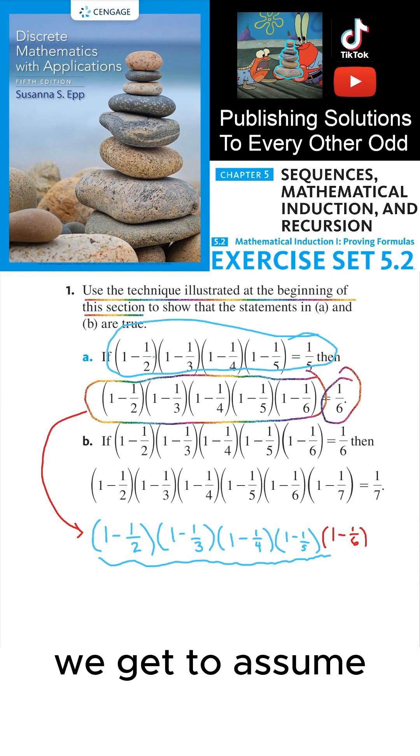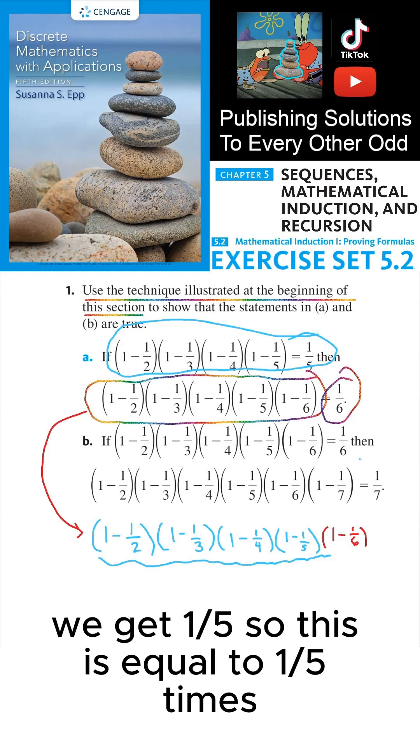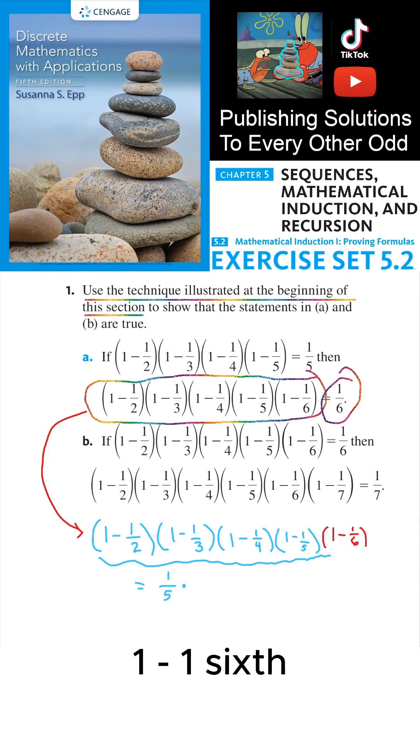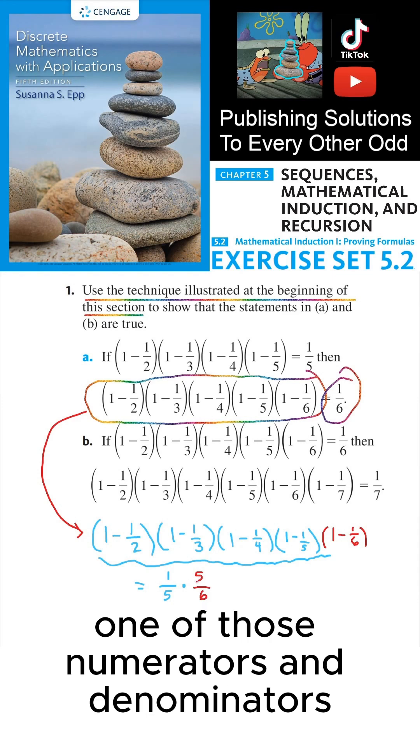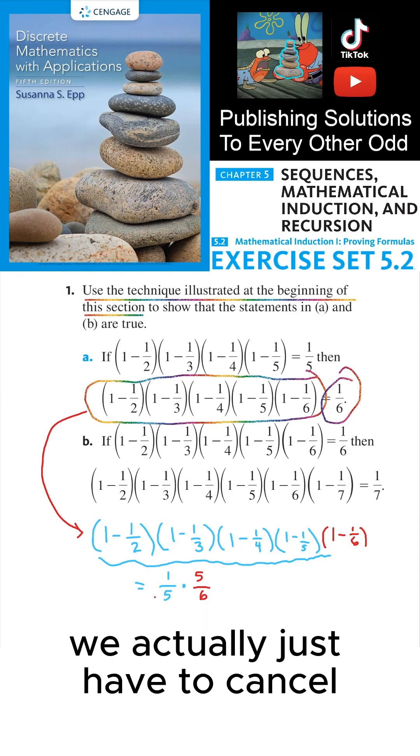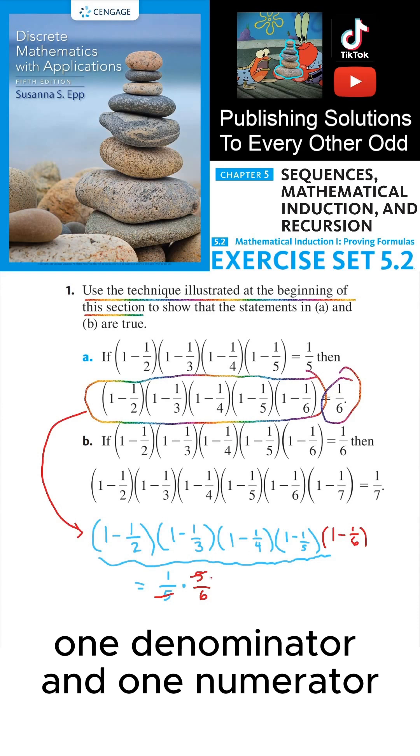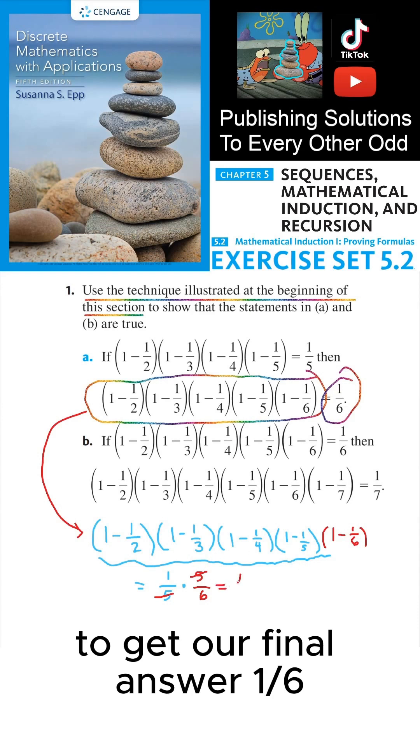we get to assume that when we multiply these four factors together, we get 1/5. So this is equal to 1/5 times (1 minus 1/6), which is just 5/6. And instead of canceling every single one of those numerators and denominators, we actually just have to cancel one denominator and one numerator to get our final answer 1/6.